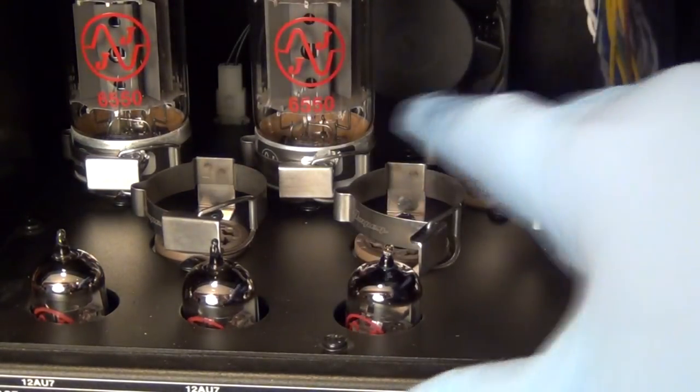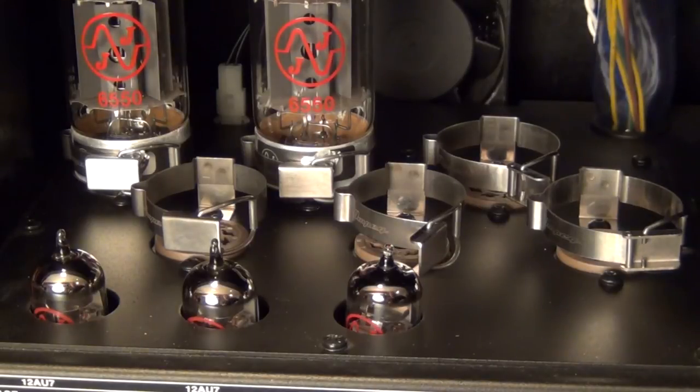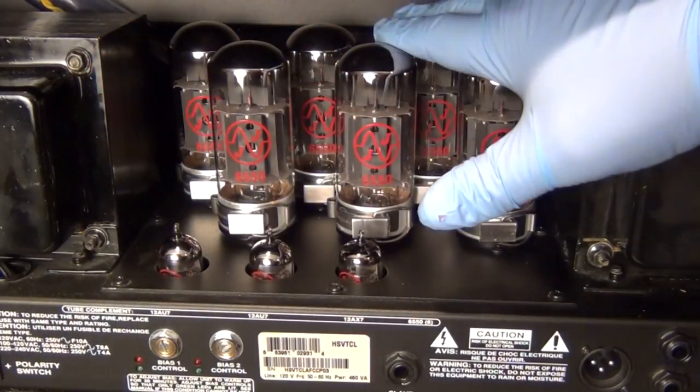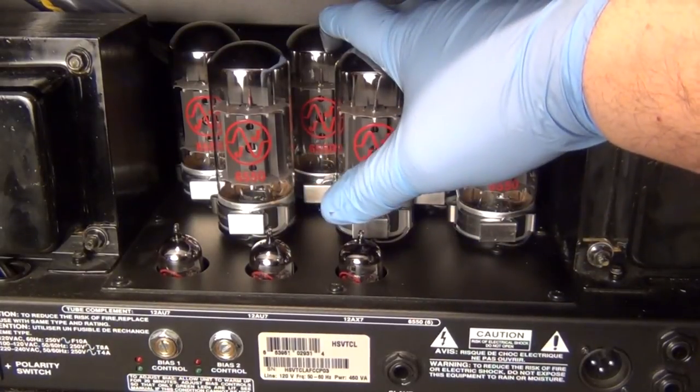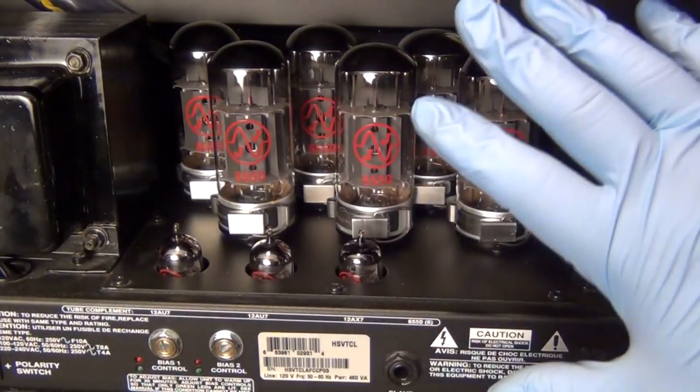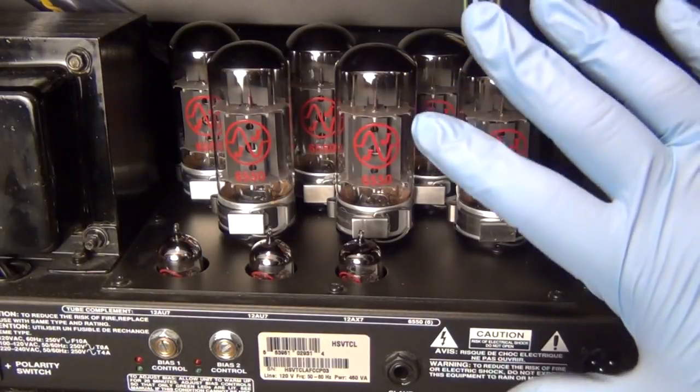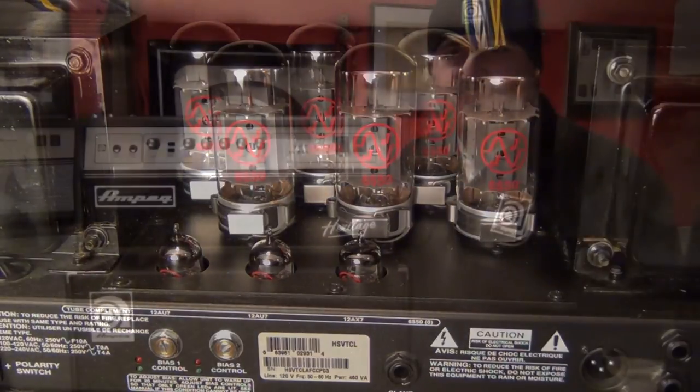And then we're going to finish up. We'll do the remaining four and we'll be back. So there you go. I've got all six of my 6550s installed. Everything's clamped down. All the tubes are seated properly. I just got to button up the back of the amp, put the metal grill back on, re-bias, and we'll be ready to go.